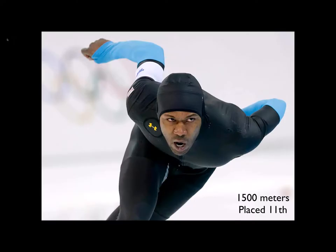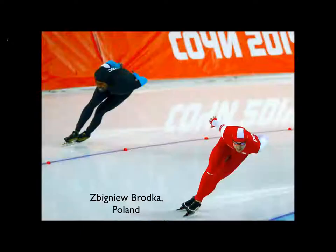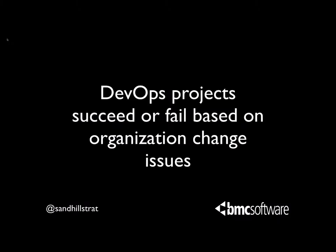Shani Davis in his next race, the 1,500 meters, wearing the old suit, also did not win — he placed 11th. His competition that day was Zbigniew Brodka from Poland, a firefighter when he's not skating. Brodka came in 27th in Vancouver and was not expected to place at all in Sochi. He skated the race of his life, and this is what Zbigniew Brodka looked like on the medal podium with the gold medal.